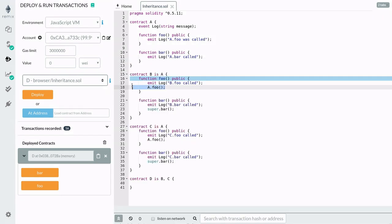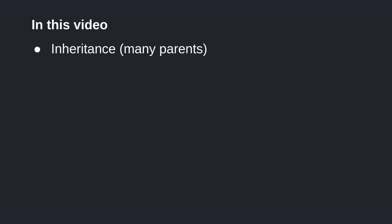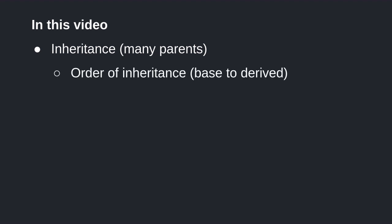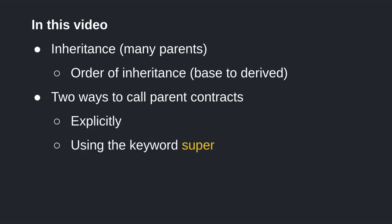In summary, you can explicitly call the parent contract or use the keyword 'super' to call all parent contracts. In this video, we went over how to write multiple inheritance in Solidity. When listing the inheritance, ordering is important and you need to list your parent contracts from most baselike to most derived. There are two ways to call parent contracts: you can explicitly call the function of a parent contract or use the keyword 'super', in which case all immediate parent contracts will be called. Thank you for watching — if anything was unclear, please put your questions in the comments below.